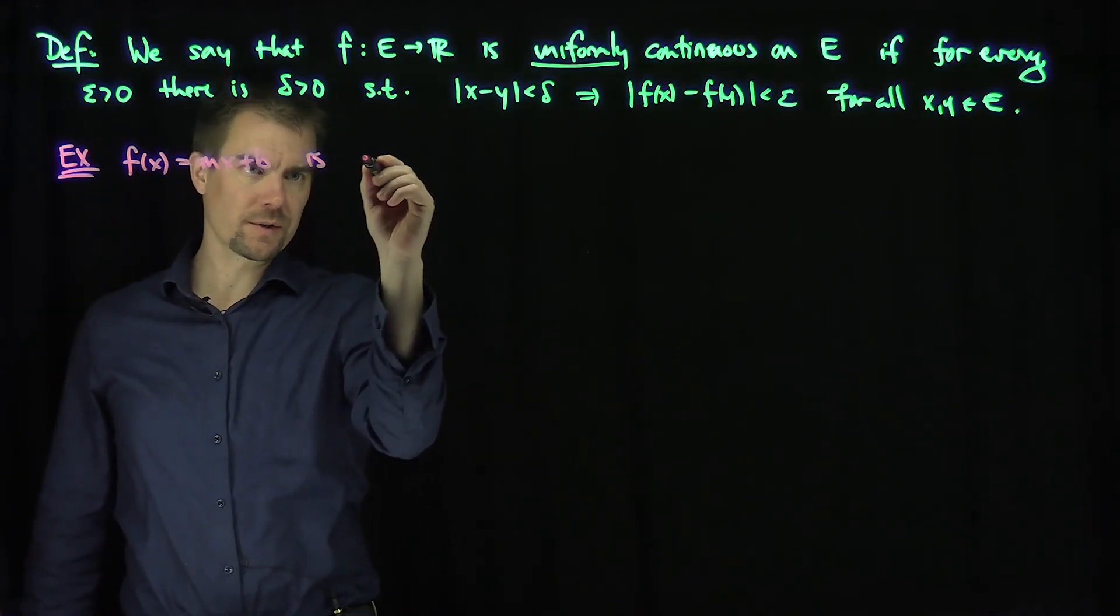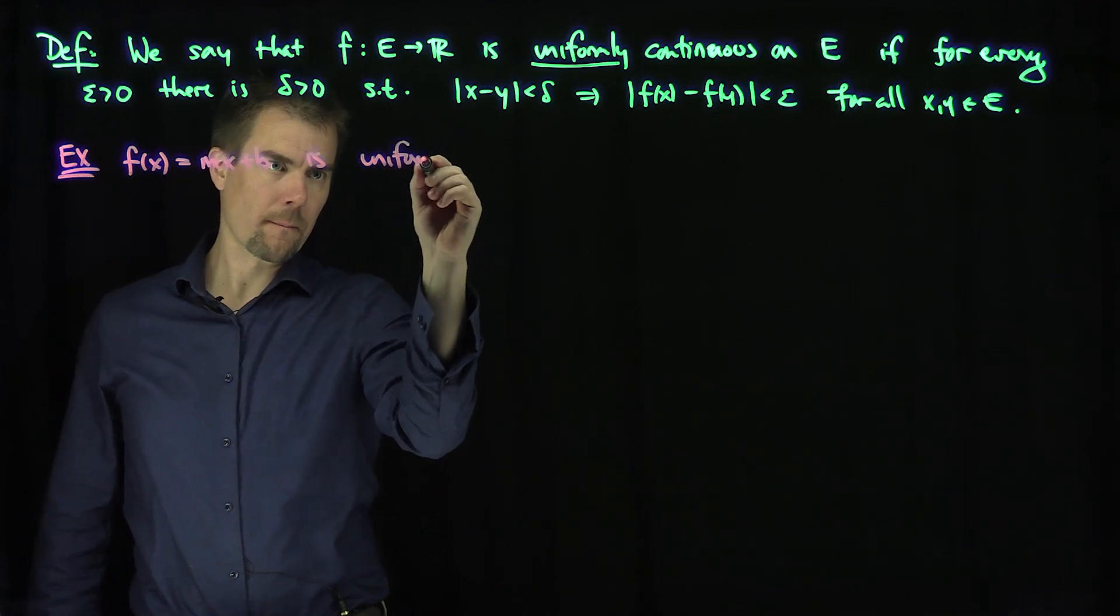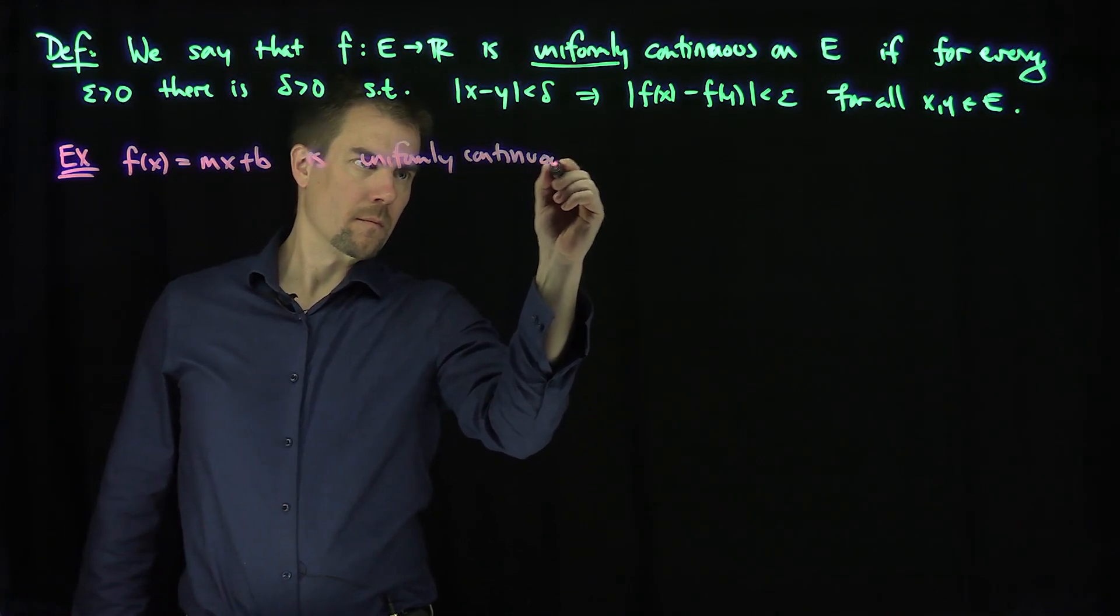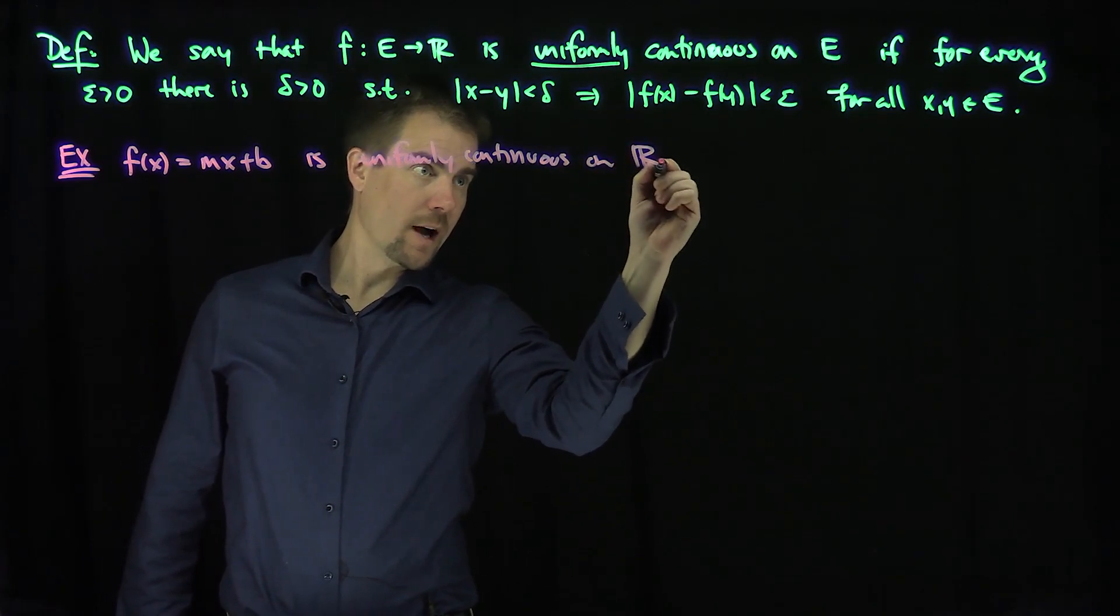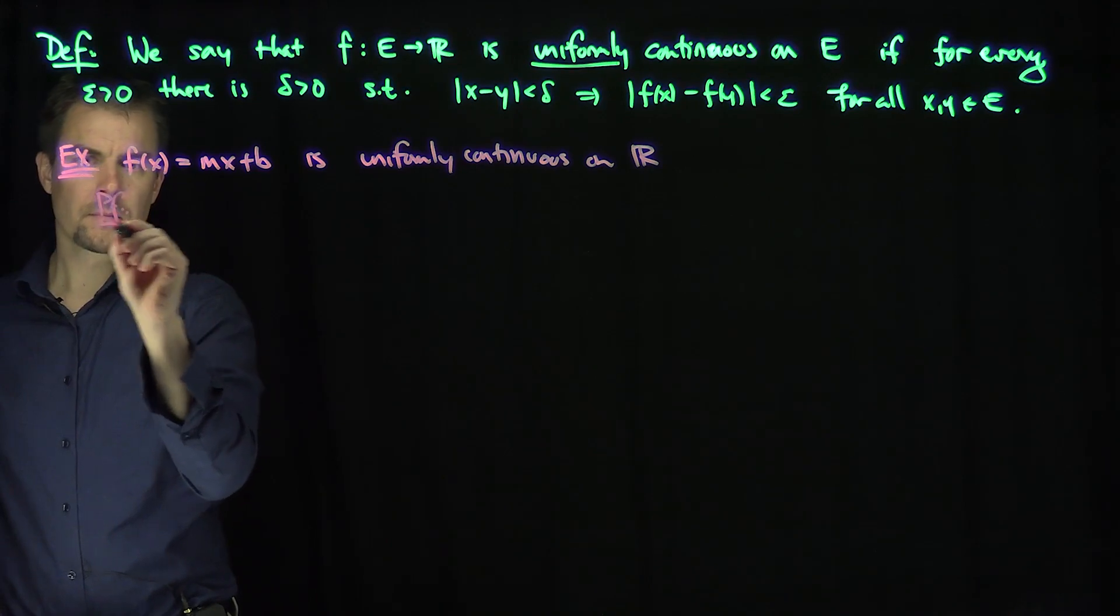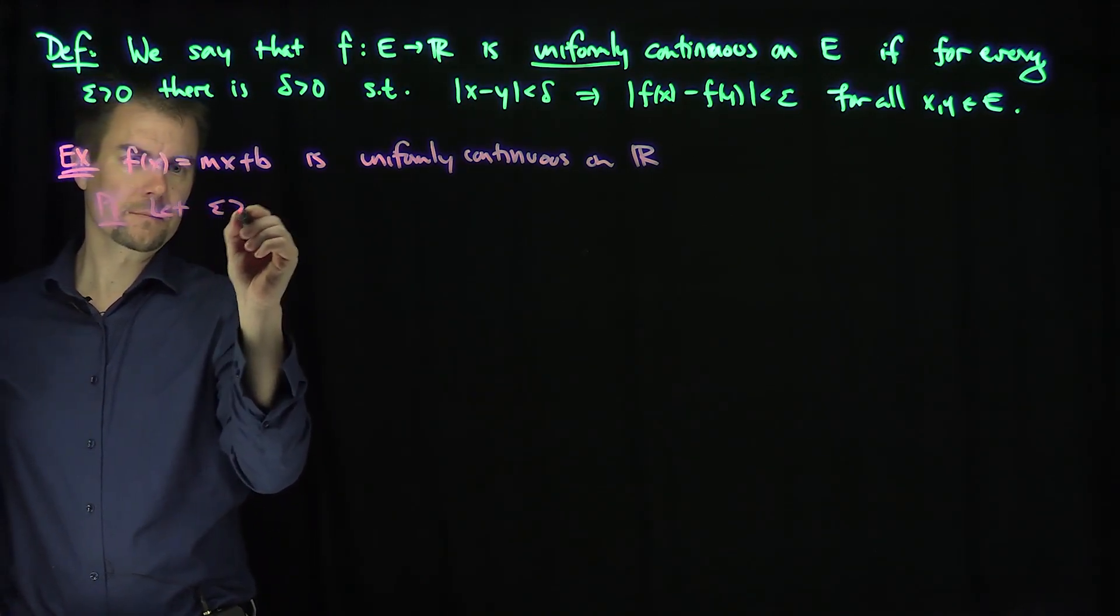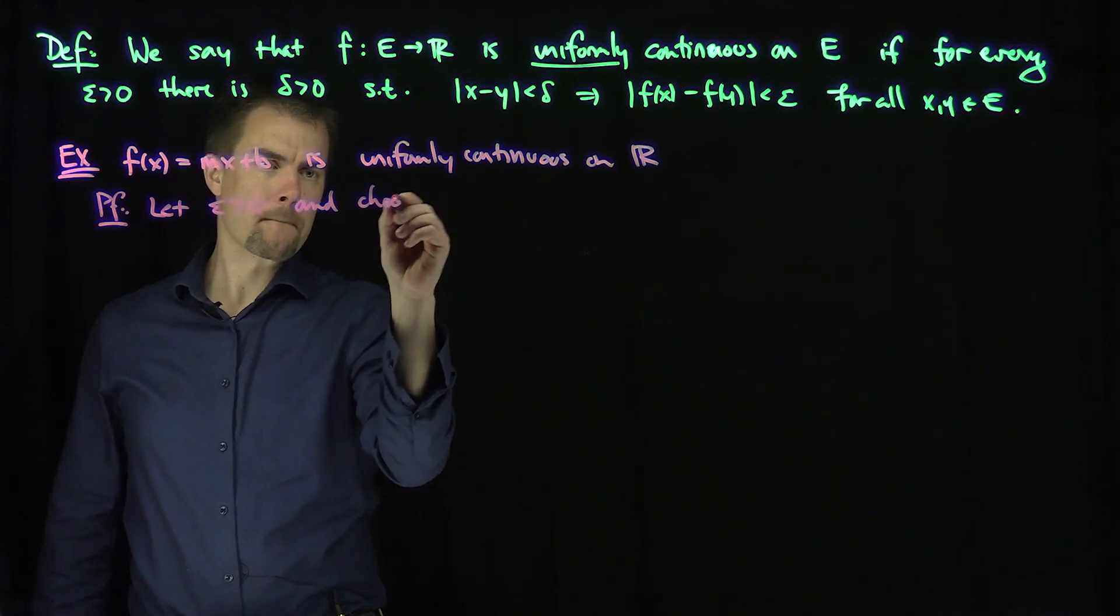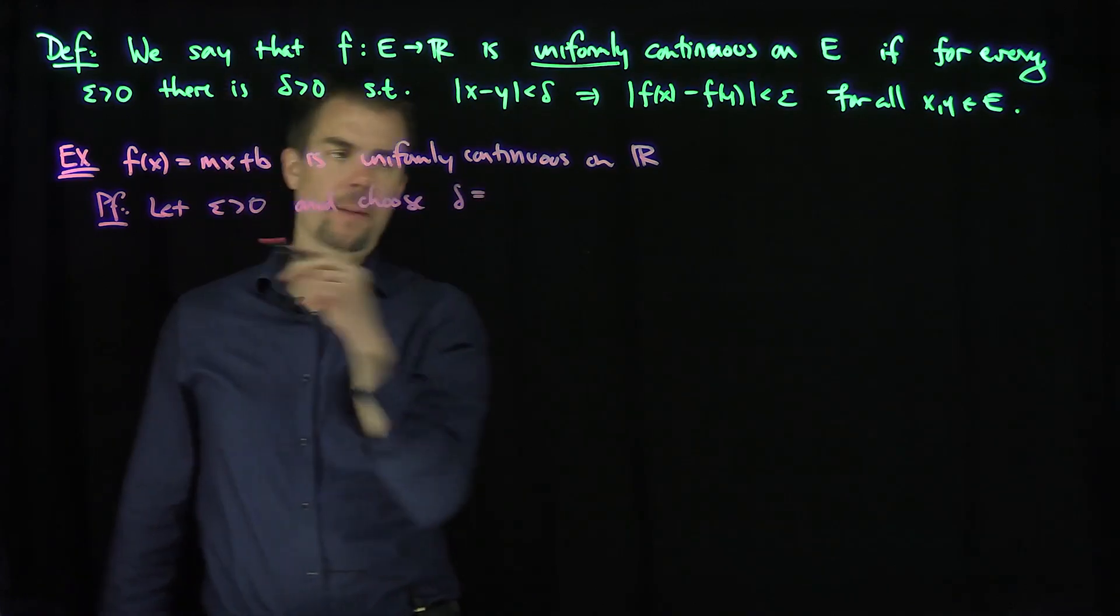is uniformly continuous on all of R. And so the proof of this: let epsilon be greater than zero and choose delta to be epsilon over m.